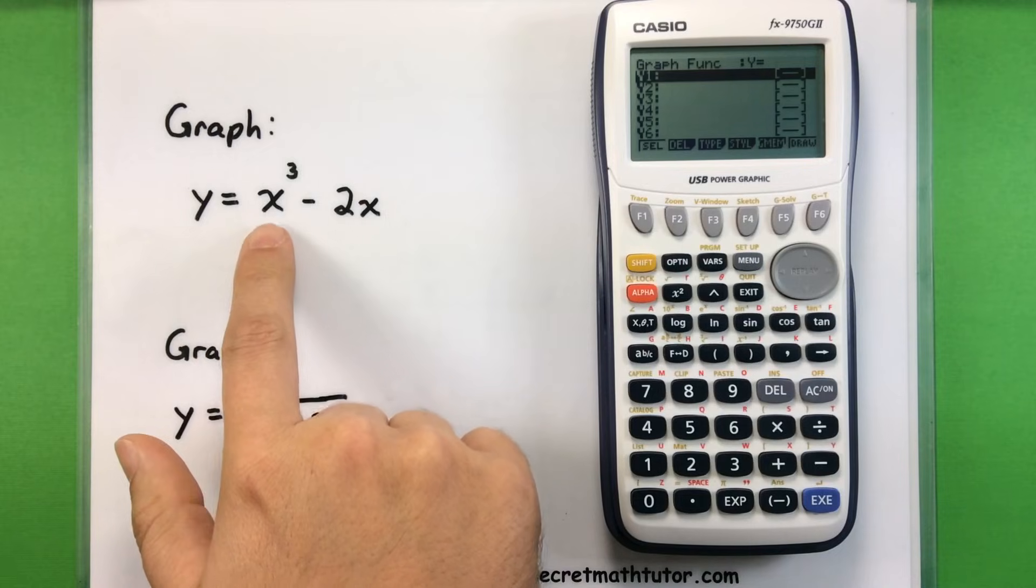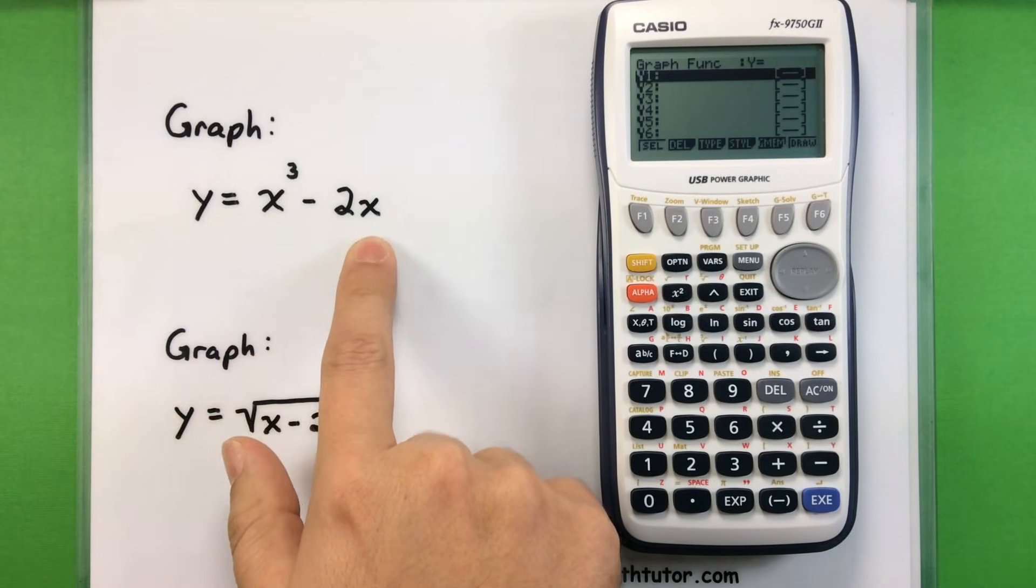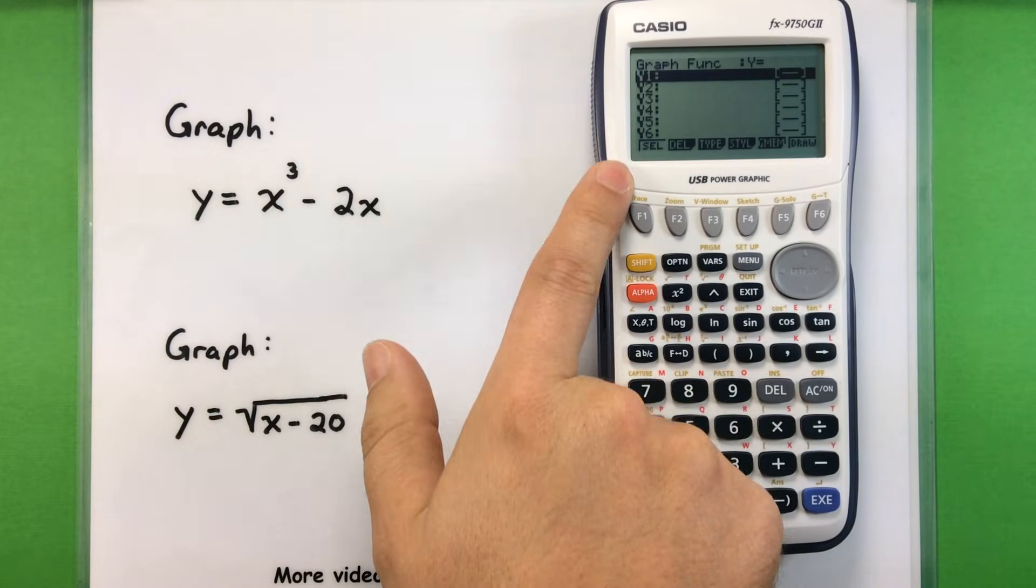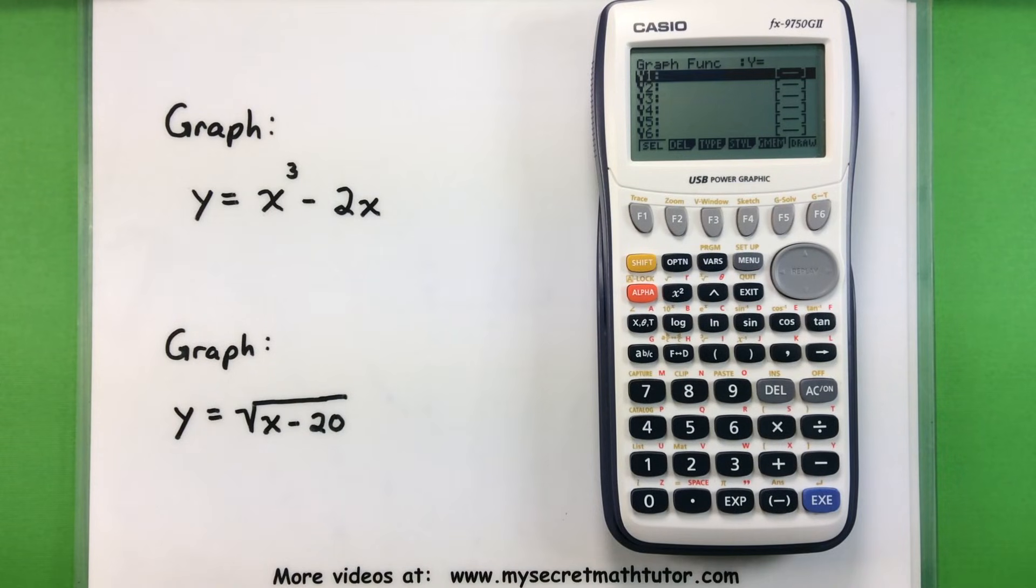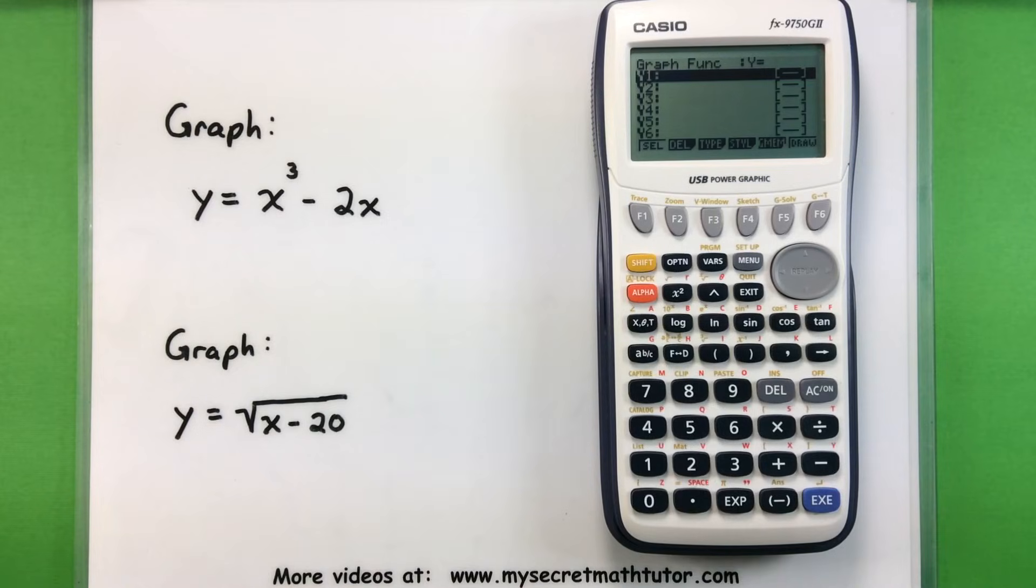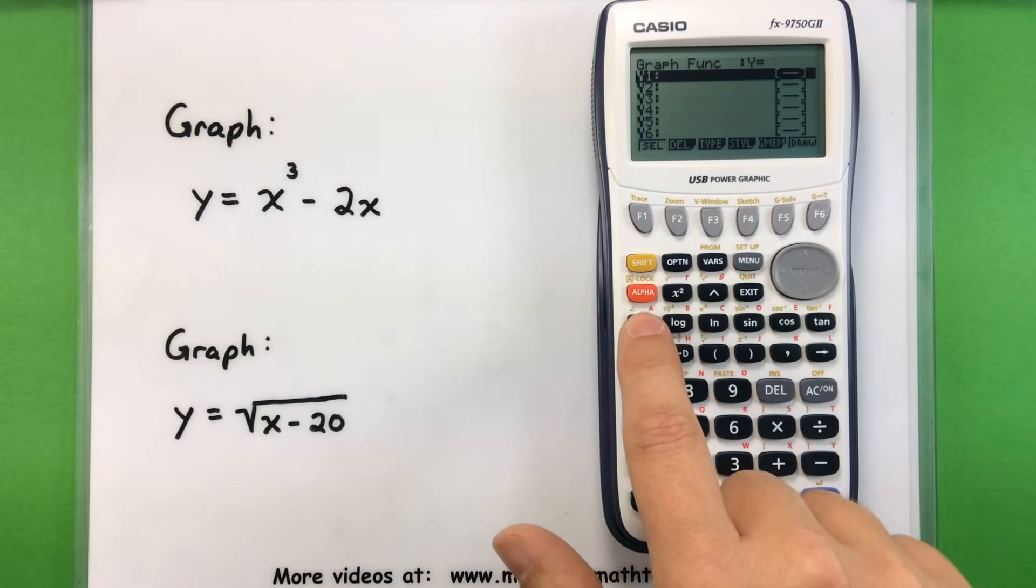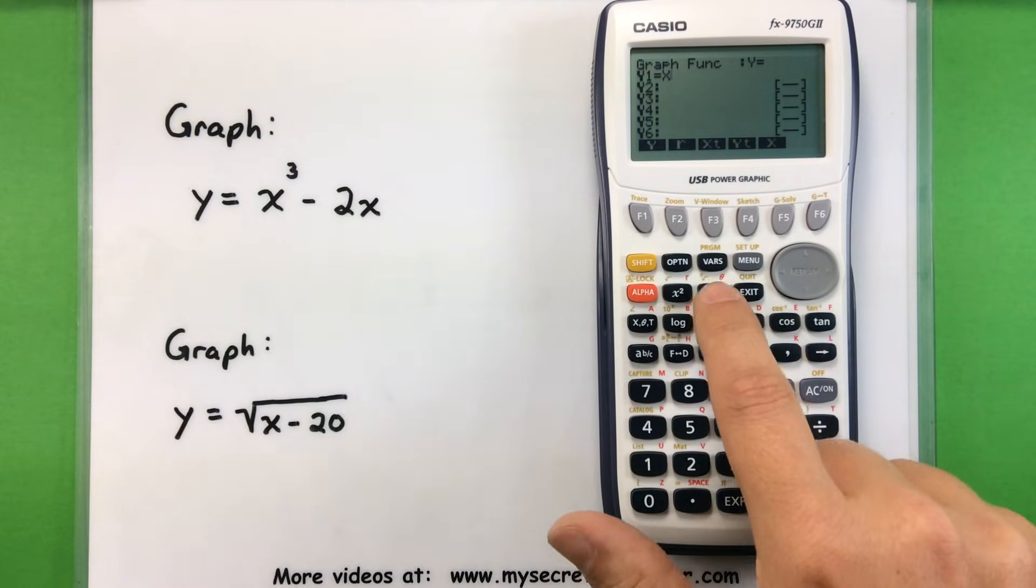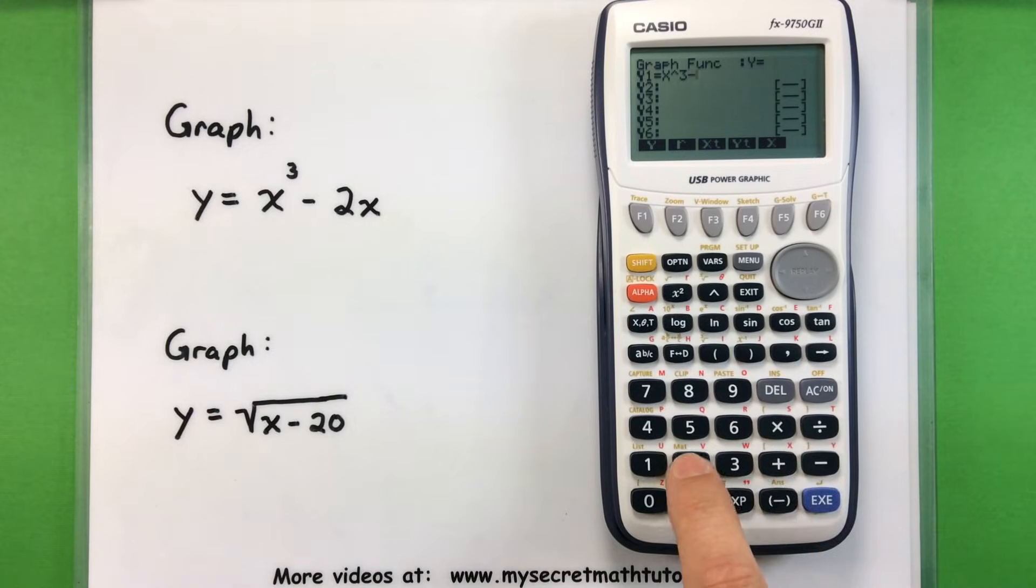The first one we're going to enter in is this x cubed minus 2x. And you'll notice that it already has the y's listed in there as y1, y2, so we'll only enter in the right side of this equation. Let's use our variable button, so x caret 3 minus 2x, and I'll press enter, and now the equation is stored inside the calculator.